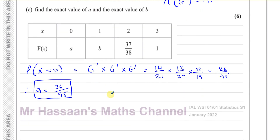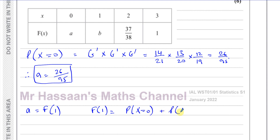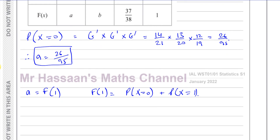For the value of b, b = F(1), which equals P(X=0) + P(X=1). We already know P(X=0) = 26/95, so we now need to find P(X=1).